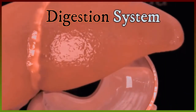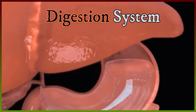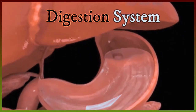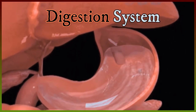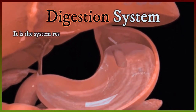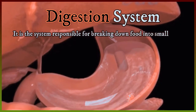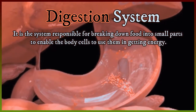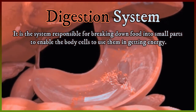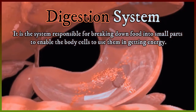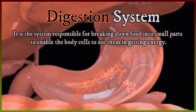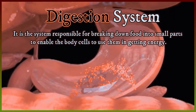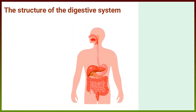In the previous video we learned the definition of the digestive system — it is the system responsible for breaking down food into small parts to enable the body cells to use them in getting energy. In this video we will discuss part one of the structure of the digestive system.